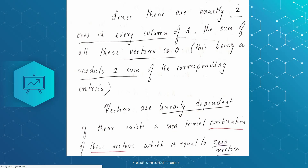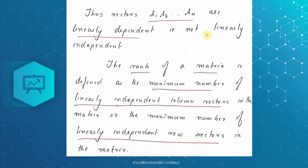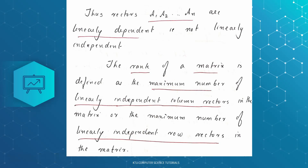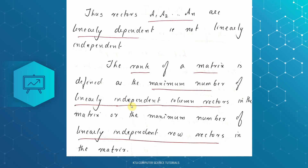If there exists a non-trivial combination of these vectors that is equal to the 0 vector, we can say the vectors are linearly dependent and not linearly independent. The rank of a matrix is defined as the maximum number of linearly independent column vectors.